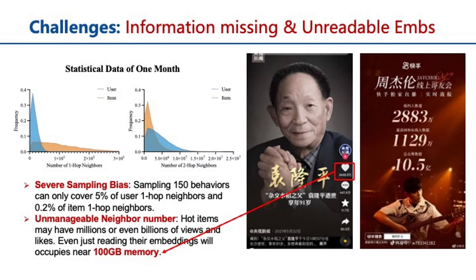Billion-scale recommender systems bring forth immense challenges too. Our analysis, illustrated by a histogram in our presentation, reveals that users can generally have thousands or even more interactions within a single month. More critically, popular items, as shown on the right, can accumulate tens of millions of likes and billions of views. This leads to severe sampling bias and a massive embedding problem. These issues underscore the limitations of existing models in coping with the scale and complexity of modern billion-scale recommender systems.